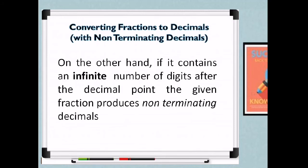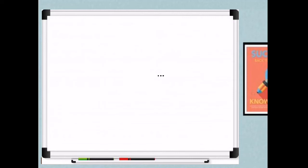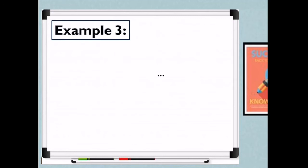On the other hand, if it contains an infinite number of digits after the decimal point, the given fraction produces non-terminating decimals. After the decimal point, you have infinitely many numbers — meaning there are many more numbers following in the quotient.